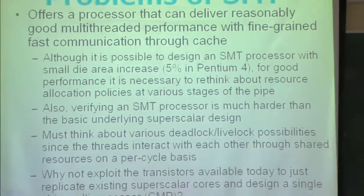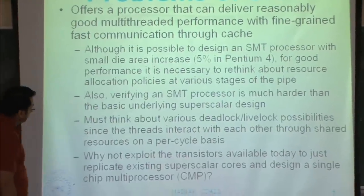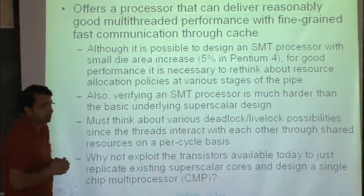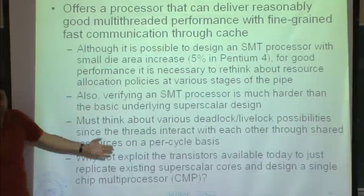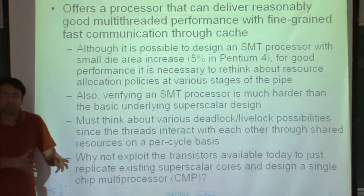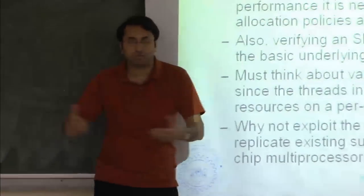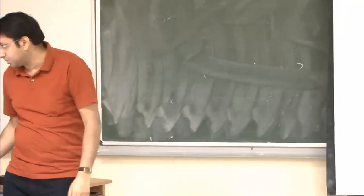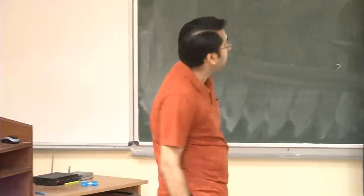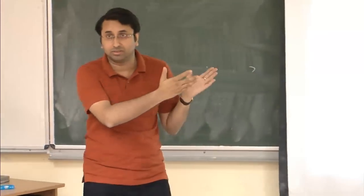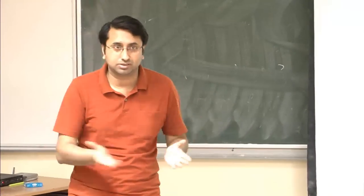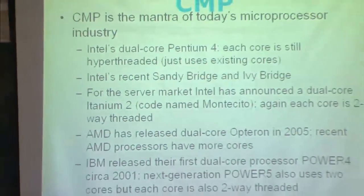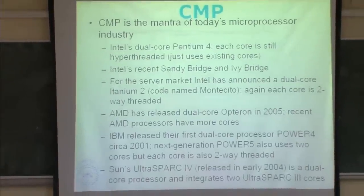Another option people considered was to exploit available transistors to simply replicate existing superscalar cores and design a single-chip multiprocessor. Rather than doing all the complexity of SMT, why not take a nice processor you've already designed and replicate it on a single chip? With so many transistors available, that led to the concept of chip multiprocessor — CMP — which is essentially the name for multi-core. In the mid-90s, when the first paper on this came out from Stanford, they named it chip-multiprocessor.